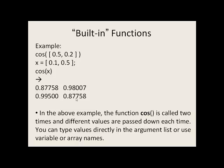In this example, we say that we call the cosine function two times, and different values can be passed down to cosine each time. You can type the variables directly in the argument list, or you can lump them all into an array and just send the array down.